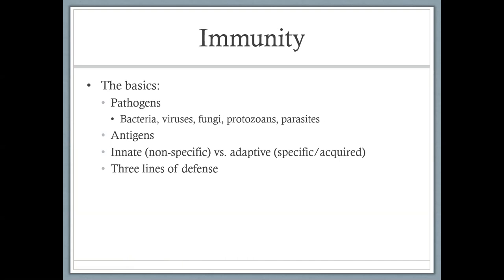When we look at immunity we can break it down into two divisions: innate versus adaptive. Innate is also known as non-specific, and adaptive is known as specific or acquired. Innate means these are things you are born with. Adaptive means it develops over time, gets more specialized — it has to be trained. Innate would be the equivalent of the walls of your house: when you buy a house it has walls, and those walls by their very nature separate the outside from the inside.